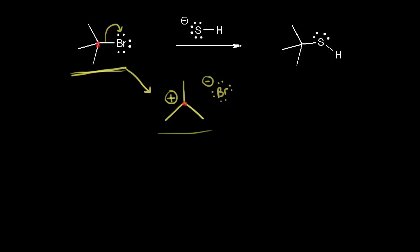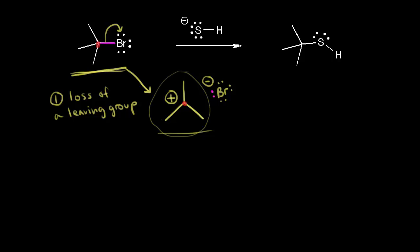The electrons in this bond come off onto the bromine to form our bromide ion, which is a good leaving group. So in the first step of our SN1 mechanism, we get loss of a leaving group, and when that happens we form our carbocation, which has a plus one formal charge. This carbocation will function as our electrophile.